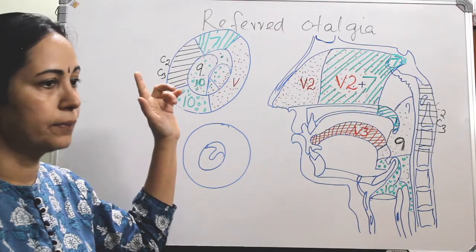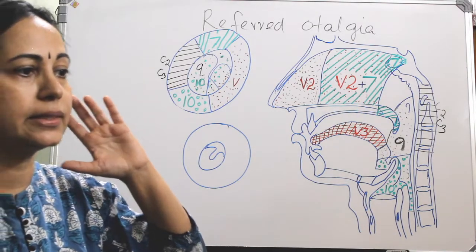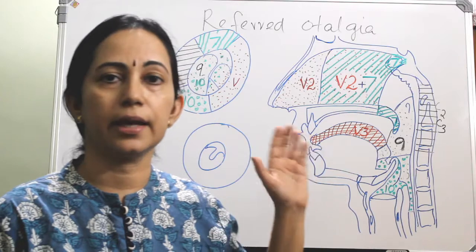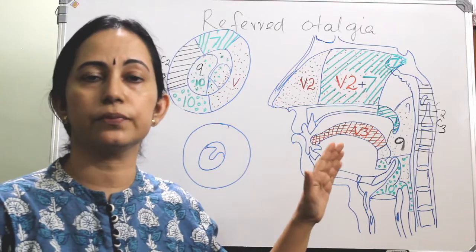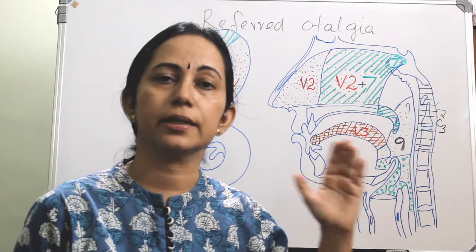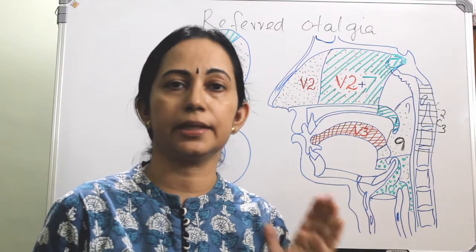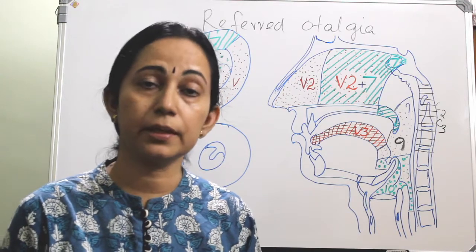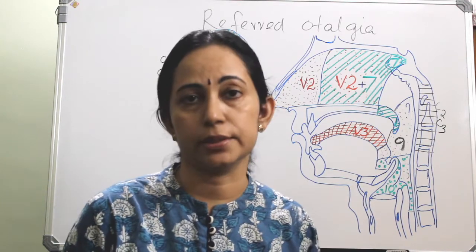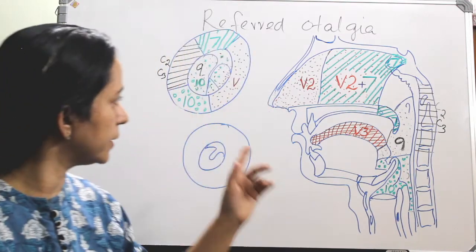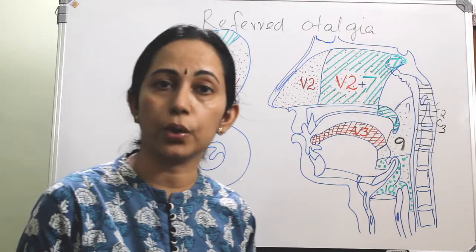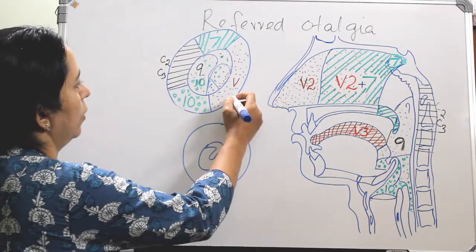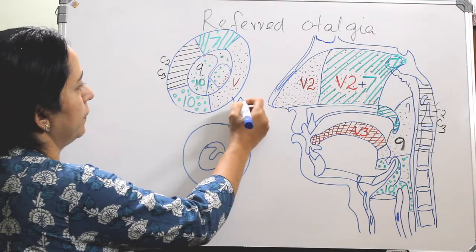In the pinna, mainly the tragus, the crus of helix, and the anterior portion of the external auditory canal, along with the corresponding anterior part of the tympanic membrane and the temporomandibular joint, are supplied by the trigeminal nerve through the auriculotemporal nerve.